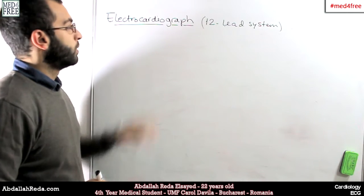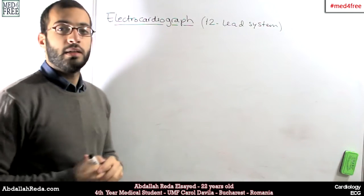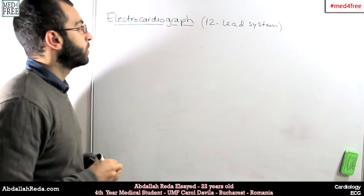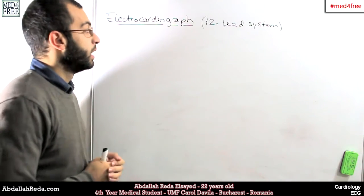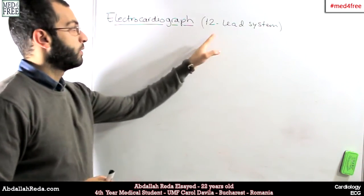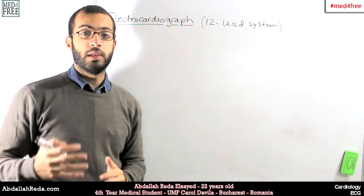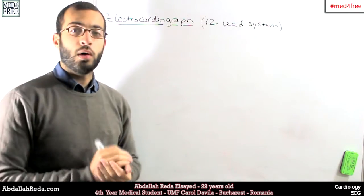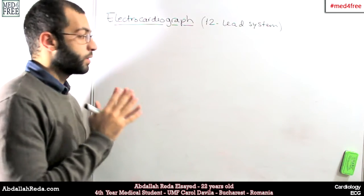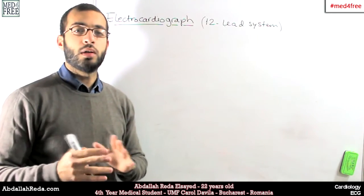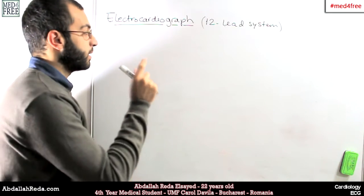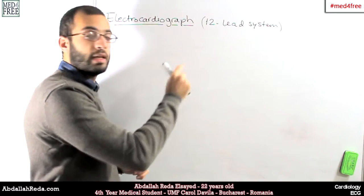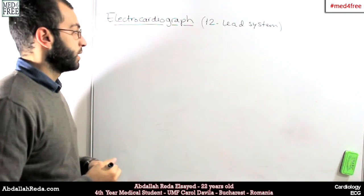In order to understand how it works, we have to know that this system gives us anatomically accurate results. This means that each one of those leads is positioned in a place to monitor the heart, or monitor a special part of the heart, so that when something goes wrong with that lead, we know that a problem is situated in that specific area or region.